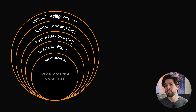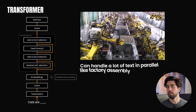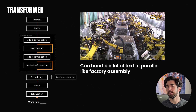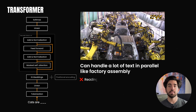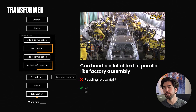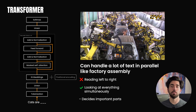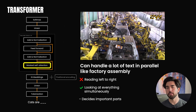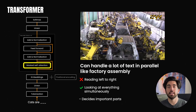LLMs belong to this category of deep learning and they use a specific format of neural networks called the transformer. Think of a transformer like a factory assembly line that can handle a lot of text in parallel, instead of just one by one, as we used to do with previous networks. Instead of reading a sentence word by word from left to right, the model can look at everything simultaneously and decide which parts of the text are more important. This is made possible by something called the attention mechanism, which tells the model to pay special attention to certain words depending on the context.